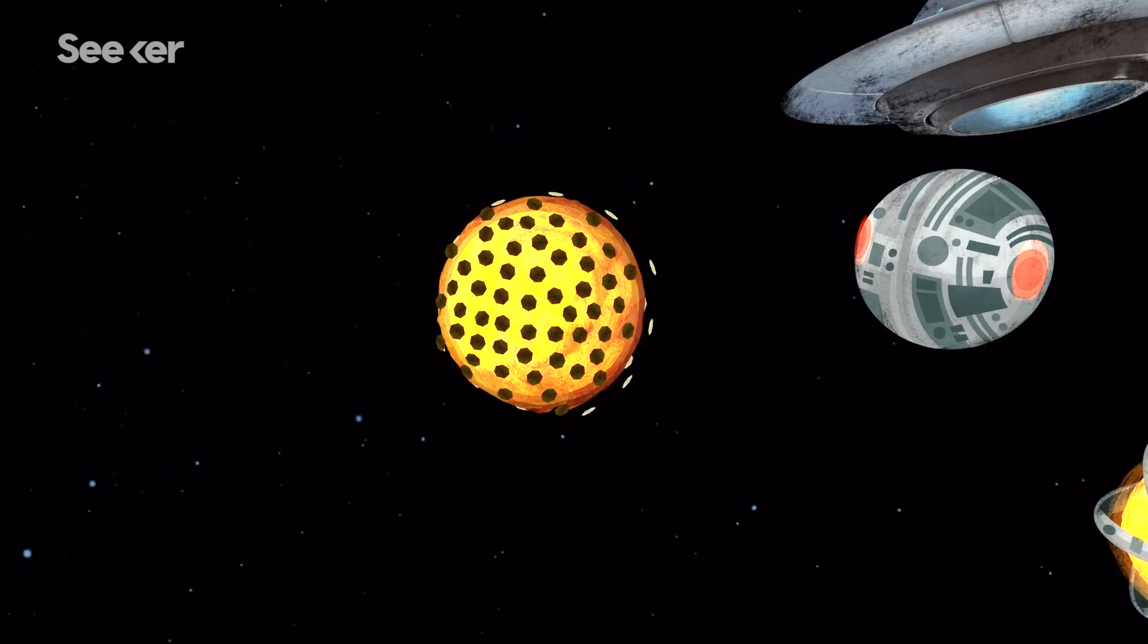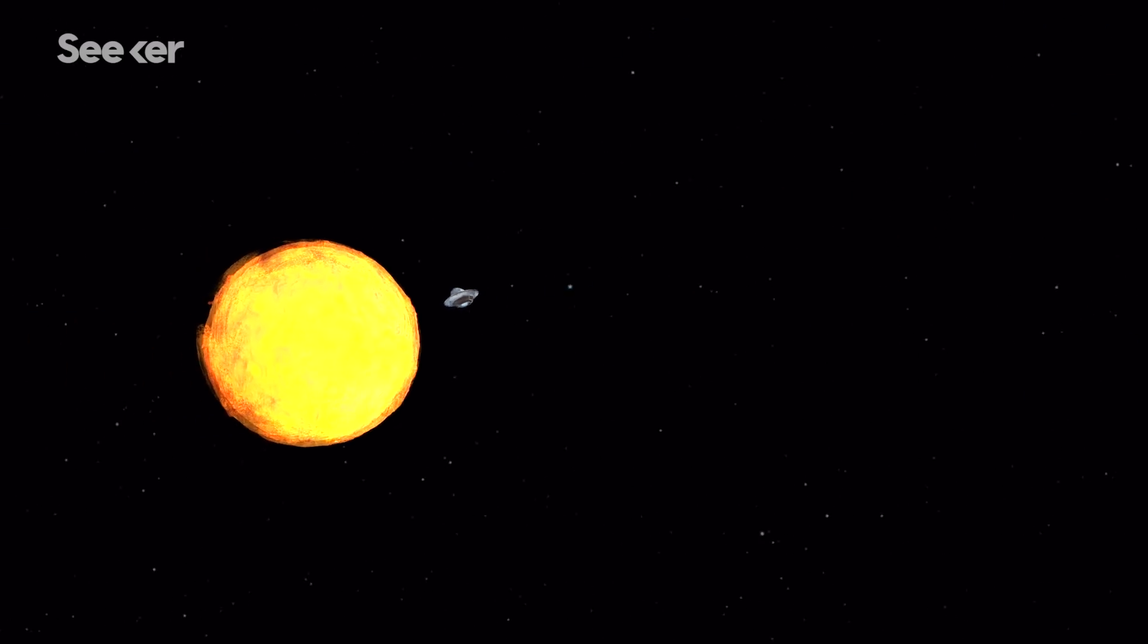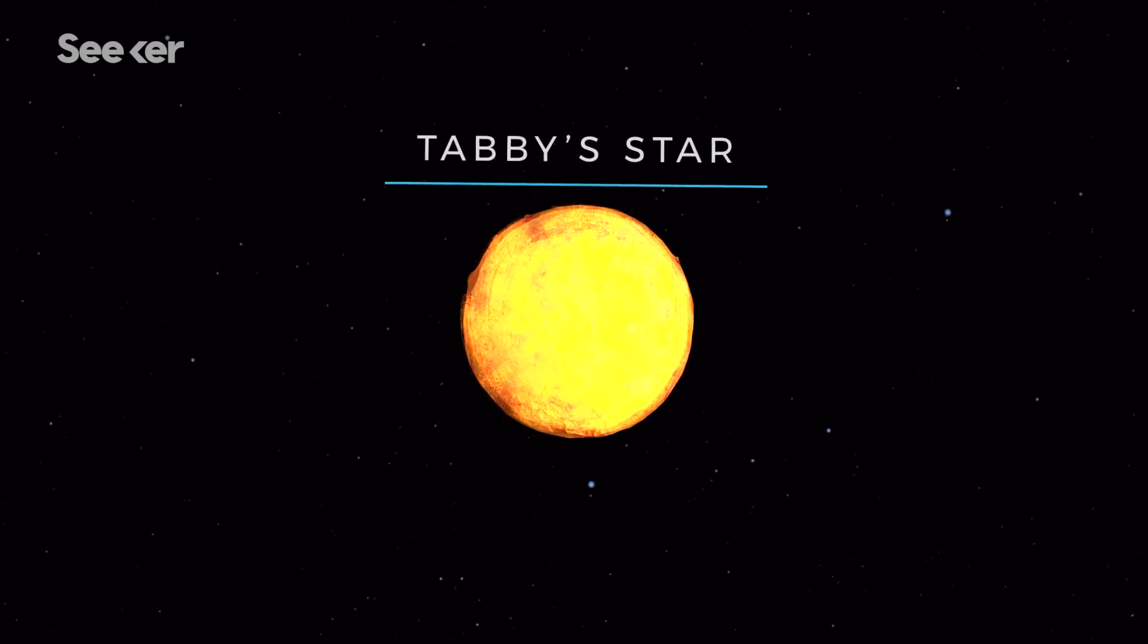But, like Freeman Dyson, some people believe that aliens might already be using Dyson Sphere-like structures. And they point to a mysterious dimming star, known as Tabby's Star, as potential evidence.